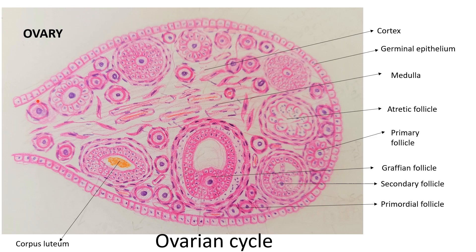Today we will study the ovarian cycle and menstrual cycle. Before that we will revise the structure of the ovary. The ovary is lined by germinal epithelium, which is the outer lining. It is cuboidal epithelium and it is a misnomer — it is not giving rise to the germ cells of the ovary.